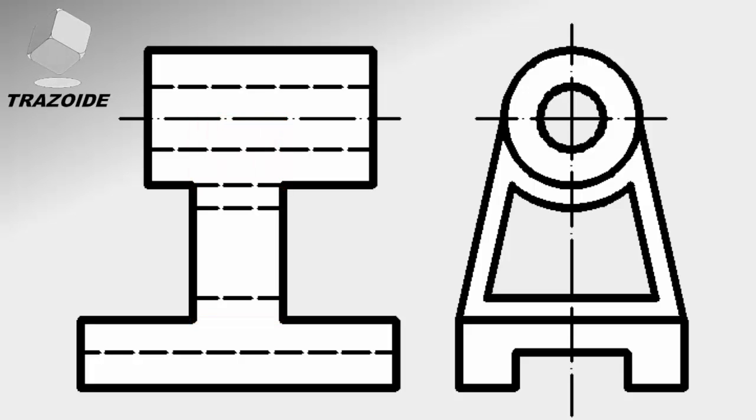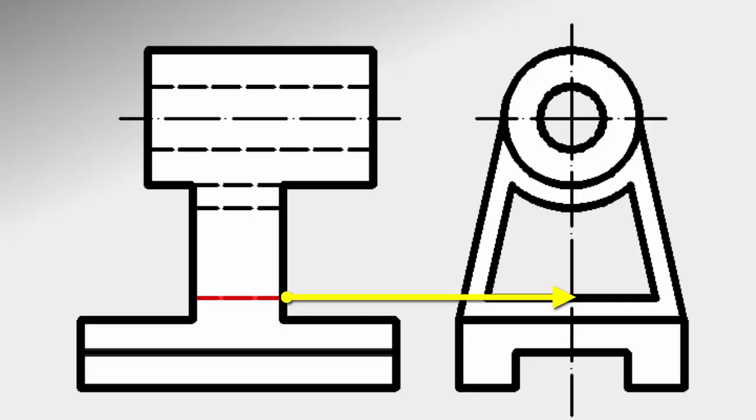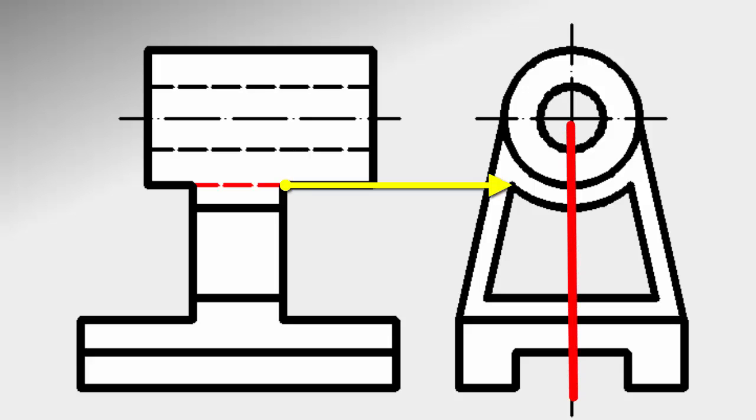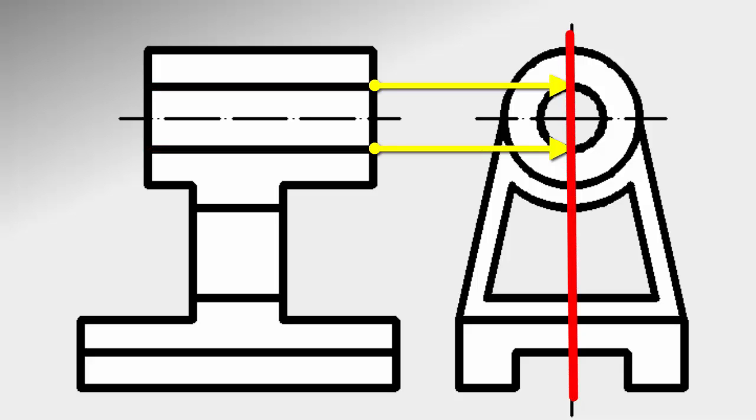Then we check the hidden lines to see if the cut goes through them. Starting from the bottom, the first line we find is the bottom slot, and the court does pass through the slot. Then we draw a continuous line. The next line belongs to the central hollow and also makes the cut. So we draw solid lines. The next line is also the central hole, so we convert it to a line of sight. The line we find then also belongs to the central hollow. It is not cut by the cutting plane so we delete it. The last two lines are the cylindrical hole, and yes, we draw a continuous line to be on the cutting plane.